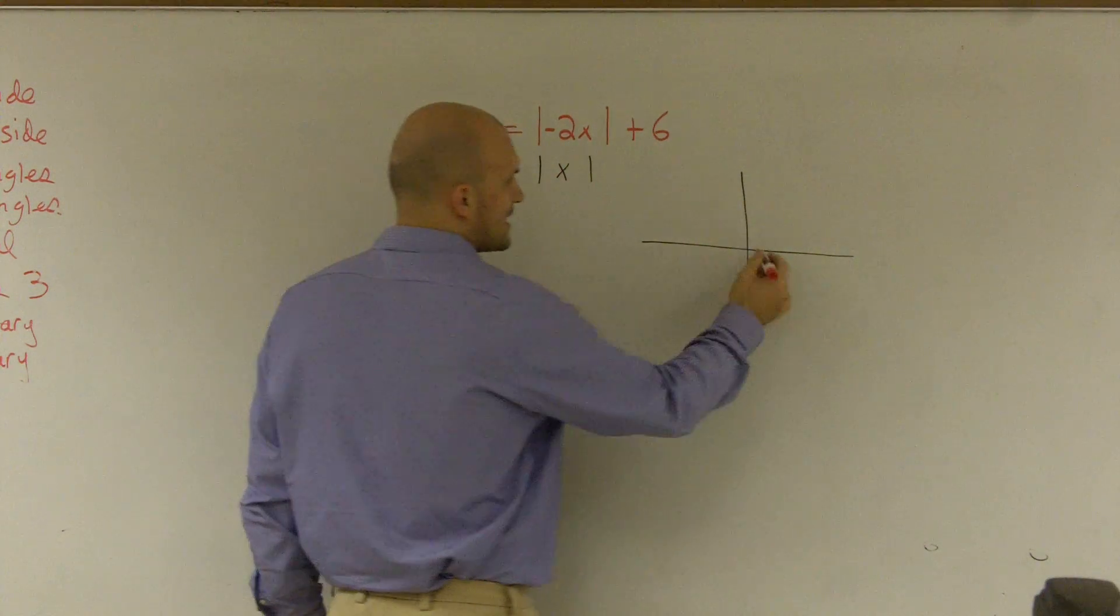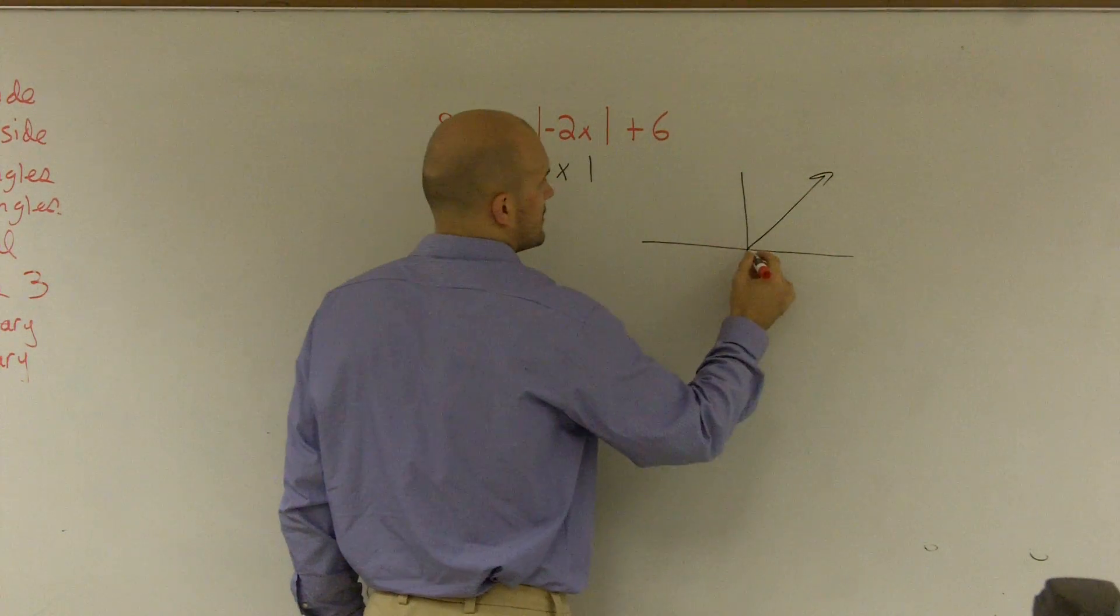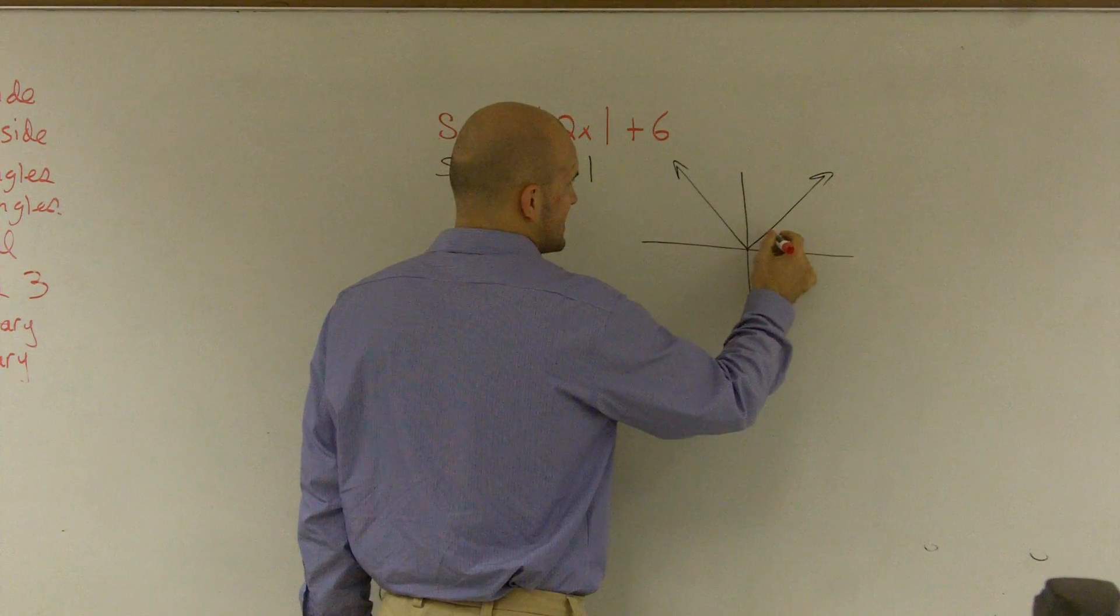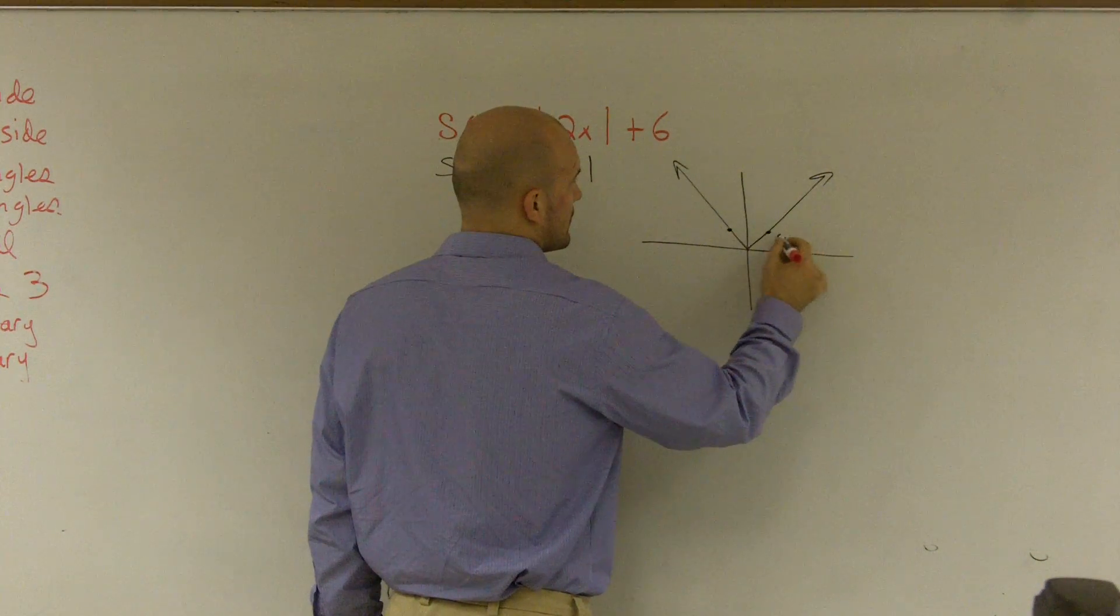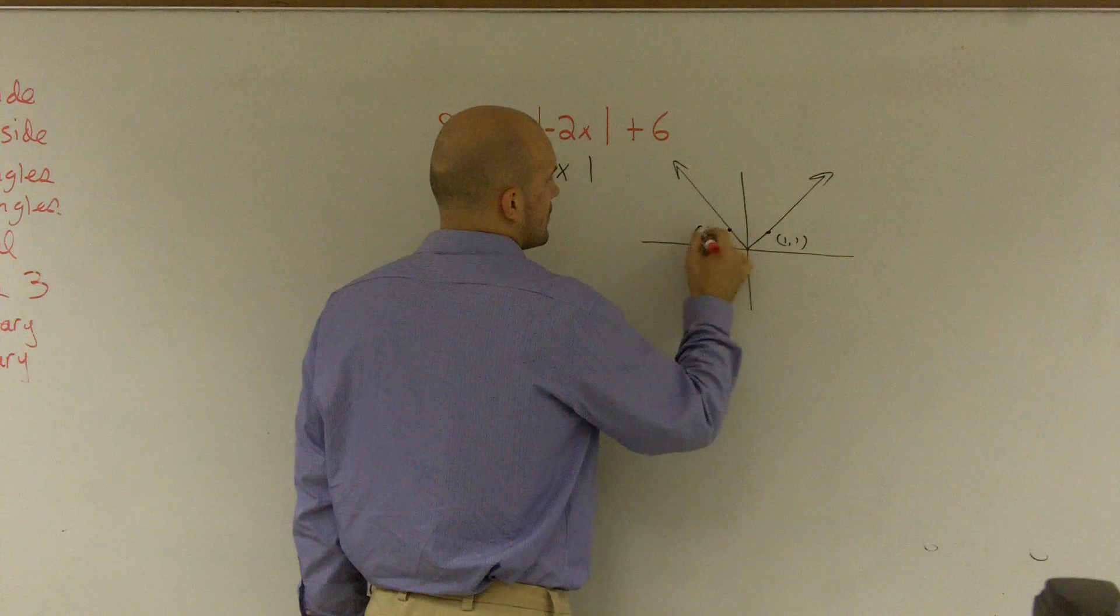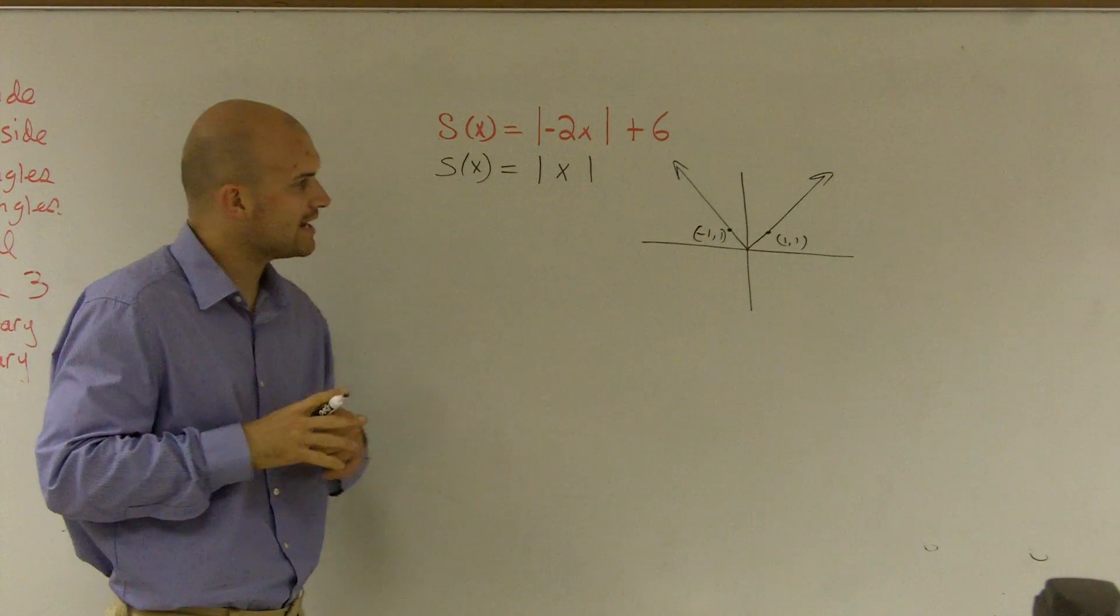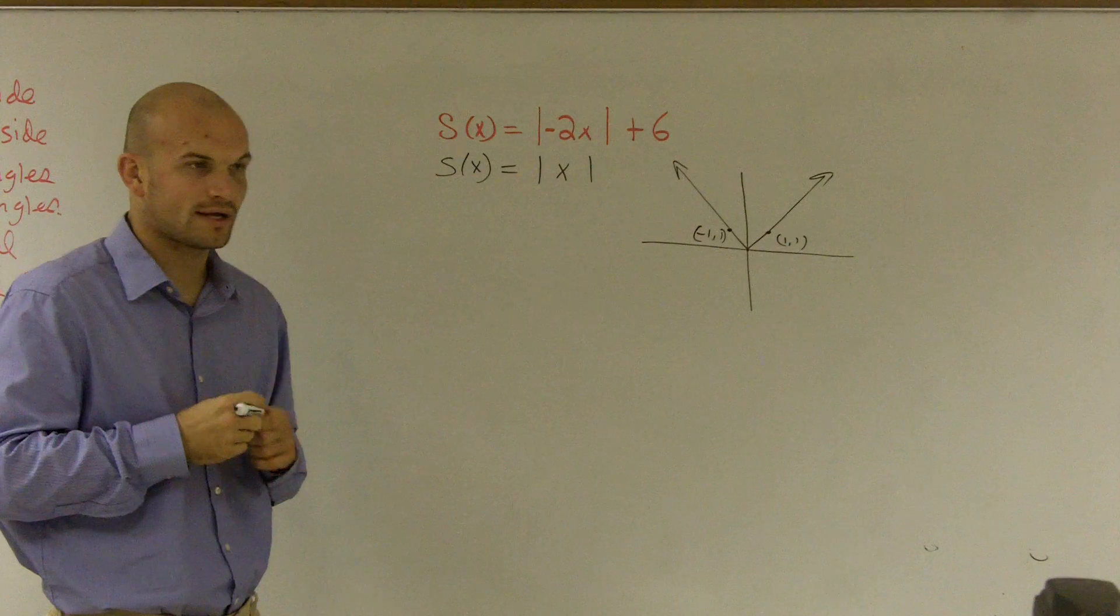Remember, the absolute value of x is going to go right there, where it's going to contain the point 1, 1 and negative 1, 1. So it contains point negative 1, 1, and it also contains point 1, 1.